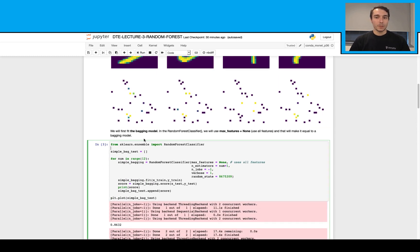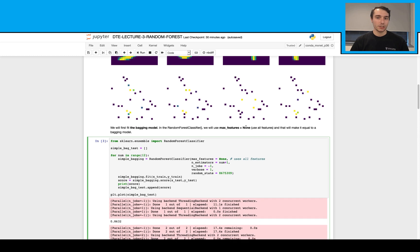So let's first get our bagging model. We will just use the random forest classifier function here, but we will just pass this max features None parameter here. This time, it will consider all the features, and it will just act like a simple bagging model here.